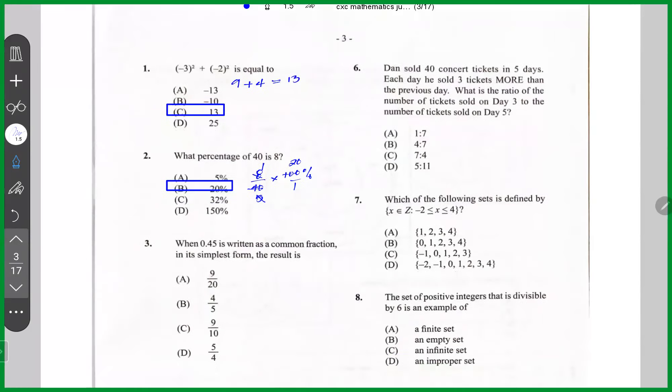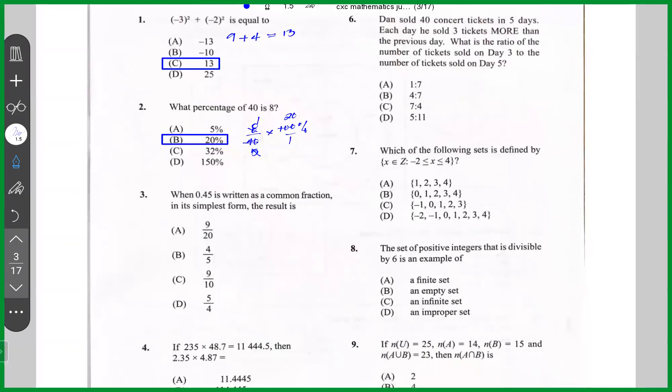Question number three, when 0.45 is written as a common fraction in its simplest form, the result is, well, the place value of the last digit five is hundredth. So this is 0.45 is the same as saying 45 over 100. If we reduce this, five into 45 goes nine times. Five into 100 goes 20 times. The answer is 9 over 20, which is A.